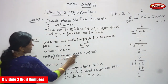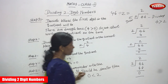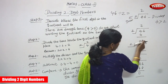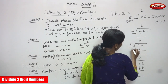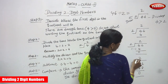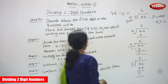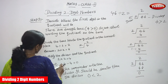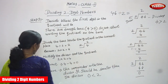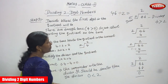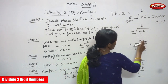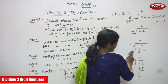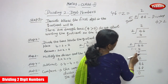Step 3: Multiply the divisor and the quotient. This is the quotient and this is the divisor. 2 into 2 is 4 — so you write 4 below the dividend. Step 4: Subtract. 4 minus 4 gives 0. This is the fourth step — the subtraction step. 4 minus 4 equals 0.